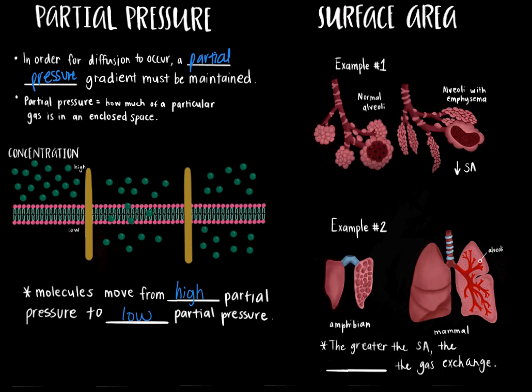We will discuss the movement of oxygen and carbon dioxide in the lungs and tissues, as well as their partial pressures in each area. Another important concept to understand is the way surface area affects gas exchange. The greater the surface area, the more efficient the gas exchange. Let's go over two examples.